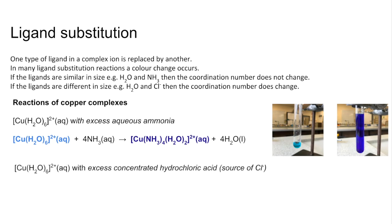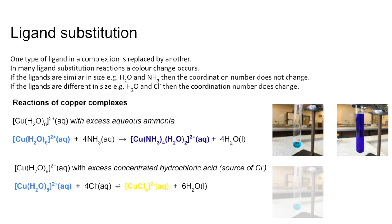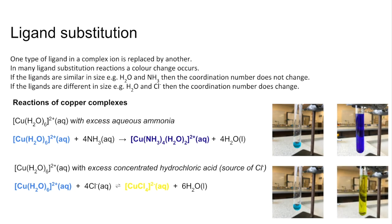The next reaction is the hexa aqua copper 2+ ion with excess concentrated hydrochloric acid, which is a source of chloride ions. You can see from the equation that all six of the water ligands have been substituted by four chloride ions, showing a change in coordination number because chloride ions are bigger than water molecules. The test tube often appears green because that reaction is reversible.